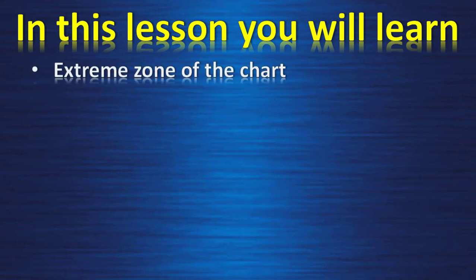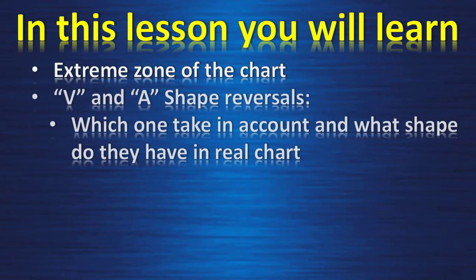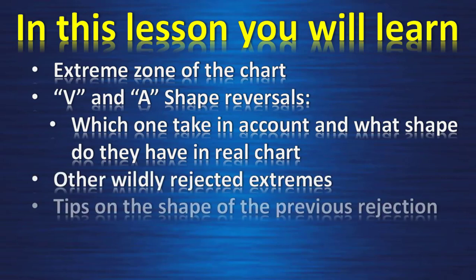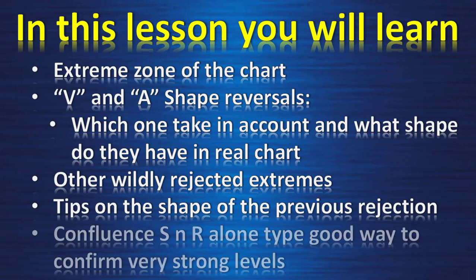In this lesson you will learn: extreme zones of the chart to find your V and capital A shape reversals, which ones to take into account and what shape they have in real charts, other widely rejected extremes, tips on the shape of the previous rejection, and confluence support and resistance — a good way to confirm very strong levels.